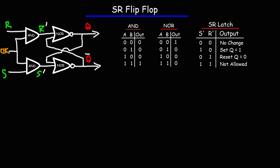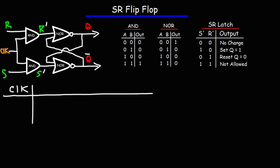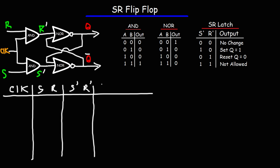At this point we're going to write up a truth table for the SR flip-flop circuit. We have the clock input, then the inputs S and R, and for the SR latch circuit the inputs S prime and R prime, and then the outputs Q and Q bar, and then the description for that output.